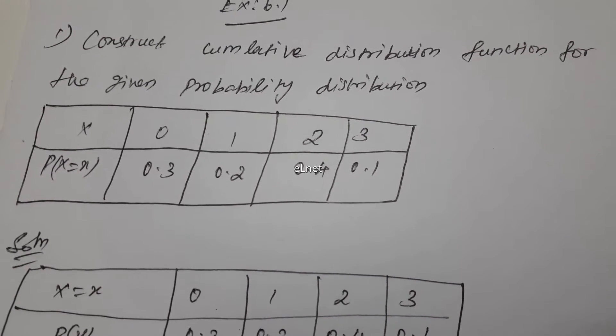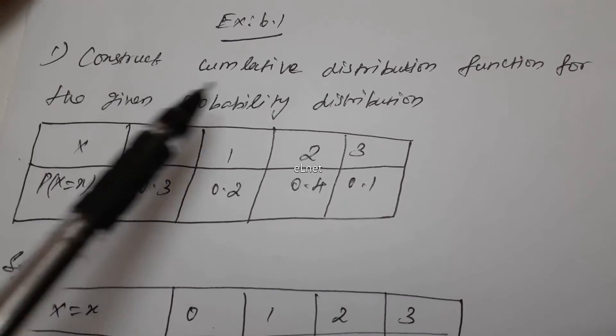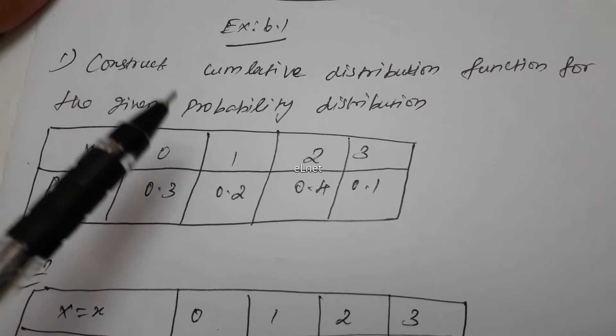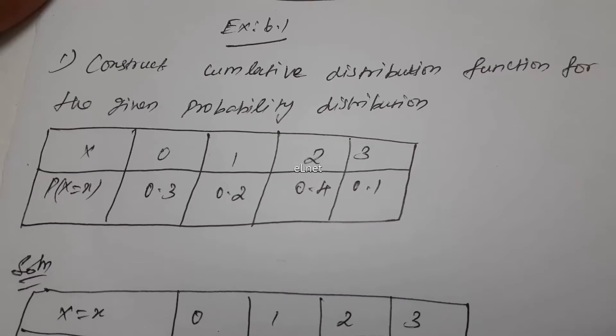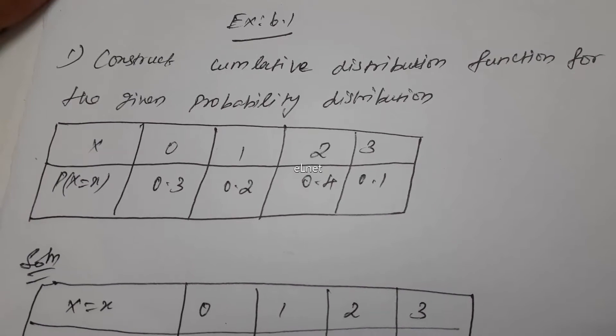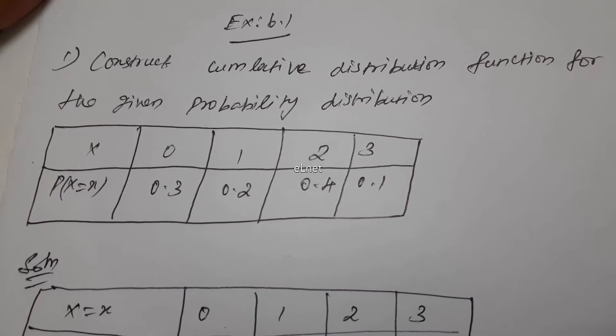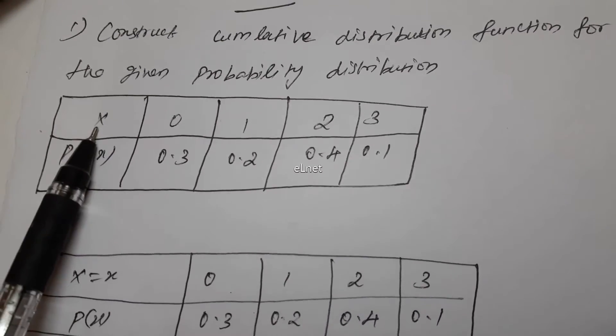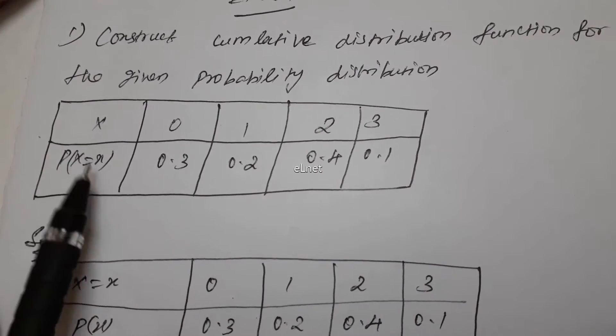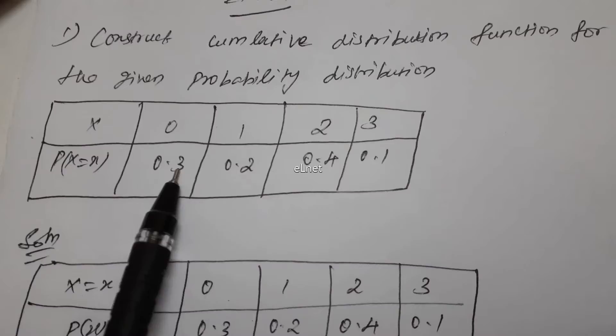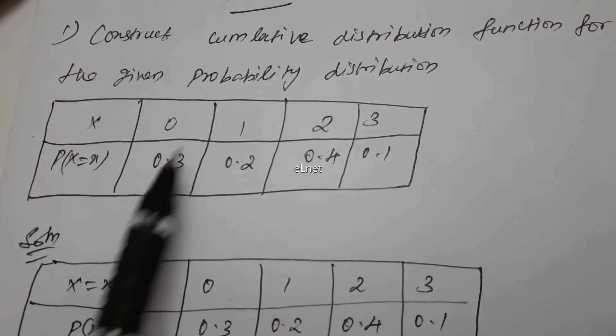Now let's construct the cumulative distribution function for the given probability distribution. The table shows: when x equals 0, P(x) equals 0.3; x equals 1, P(x) equals 0.2; x equals 2, P(x) equals 0.4; x equals 3, P(x) equals 0.1.